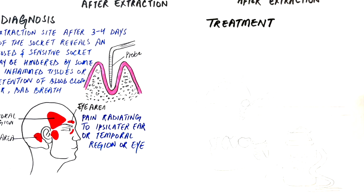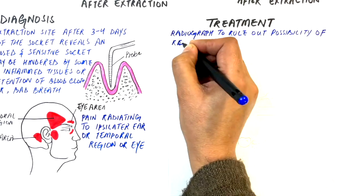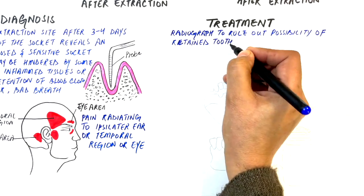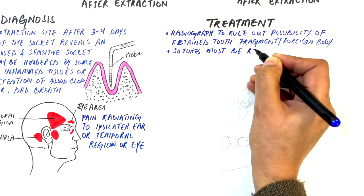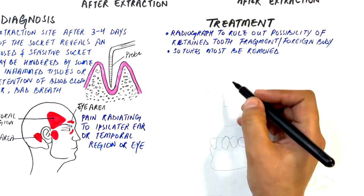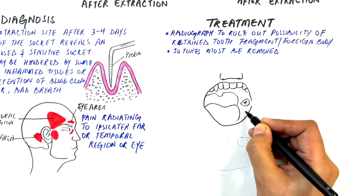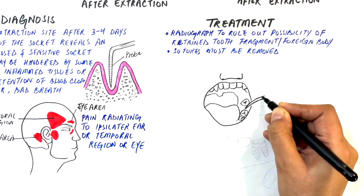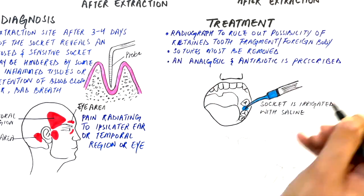To provide effective treatment, the dentist should first take a radiograph of the affected area to rule out the possibility of a retained tooth fragment or presence of any foreign body within the socket. If sutures are present, all sutures must be removed. The tooth socket is then irrigated with warm saline, and a potent analgesic and an oral antibiotic are prescribed.